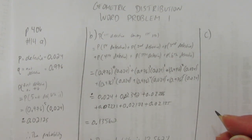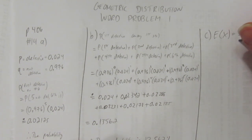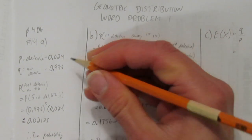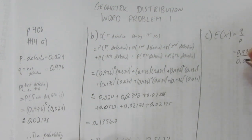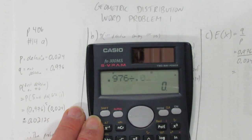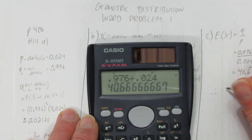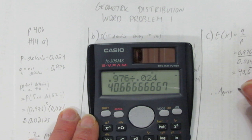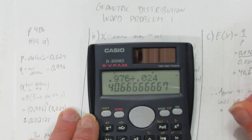And then, part C says, what is the expected waiting time until the first defective circuit board? Well, expected value for a geometric distribution is just Q divided by P. And we just take our Q value, which is 0.976, and divide by our P value, 0.024. What's the expected waiting time until we see a defective one? You get 40.6 repeating forever. Therefore, we expect approximately 41 boards until we see a defective one.